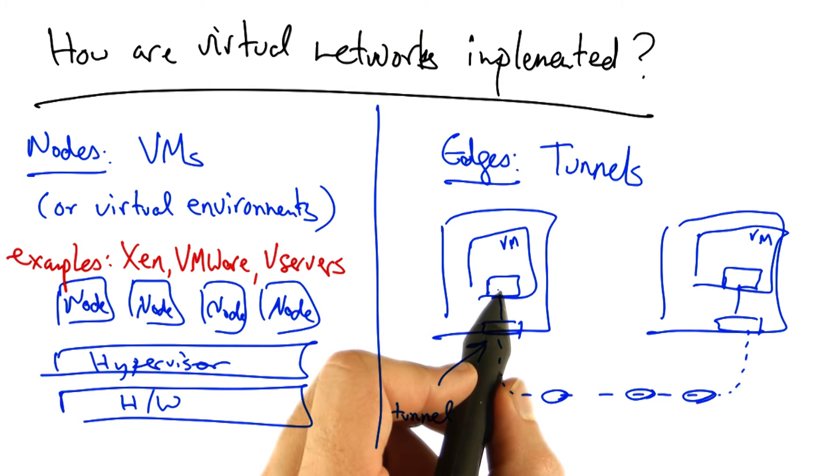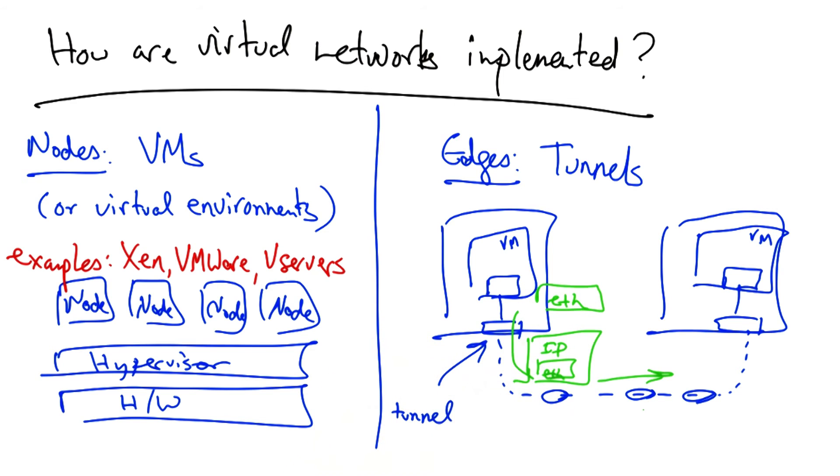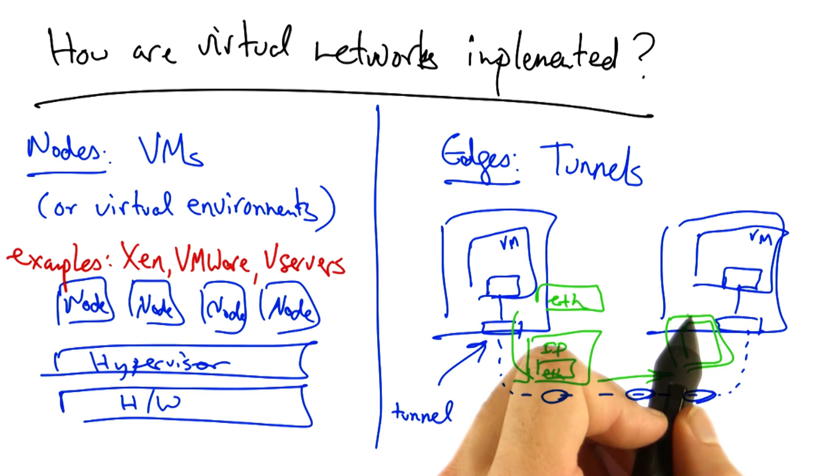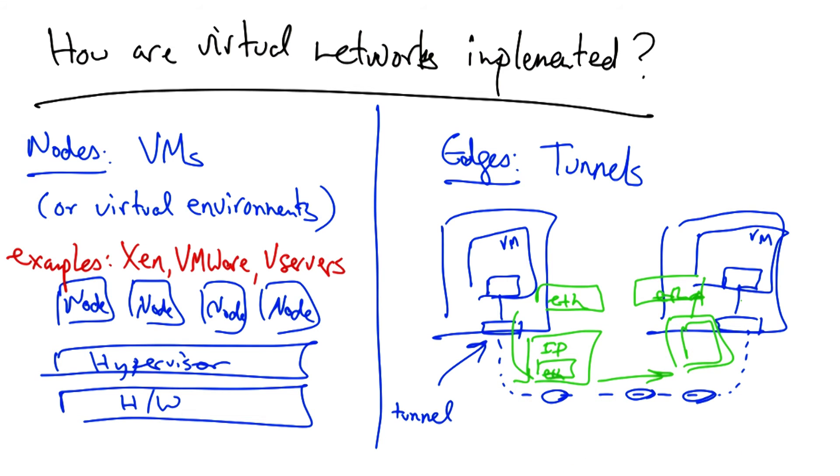One possible way of doing that is to encapsulate the Ethernet packet as it leaves the VM on the left in an IP packet. The IP packet can then be destined for the IP address of the machine on the right. When the packet arrives at this machine, the host can decapsulate the packet and pass the original Ethernet packet to the VM, or the virtual environment, that's residing on that physical node.